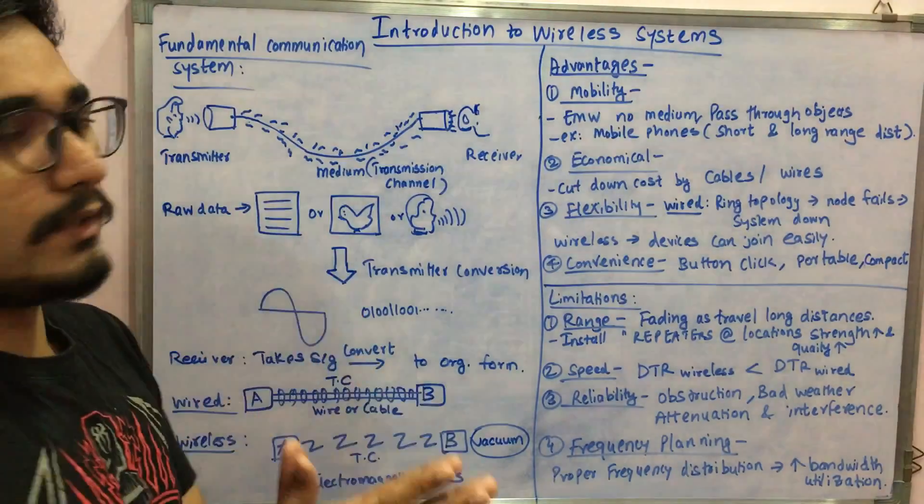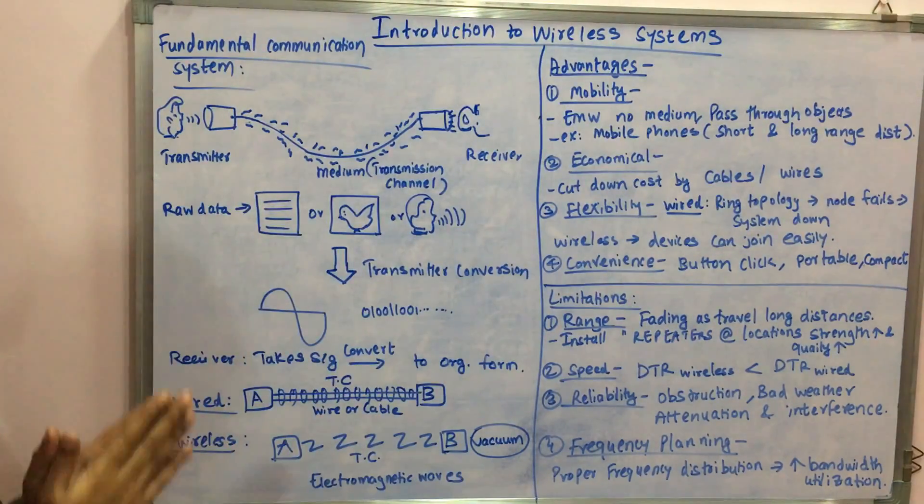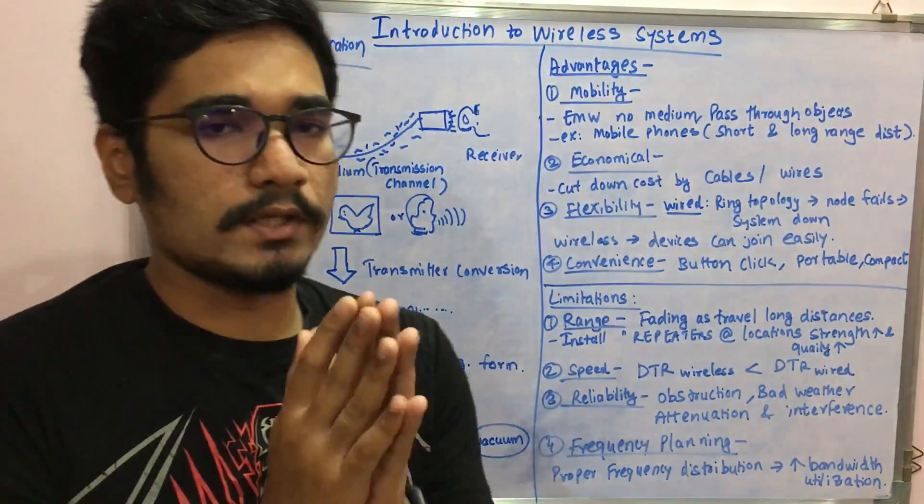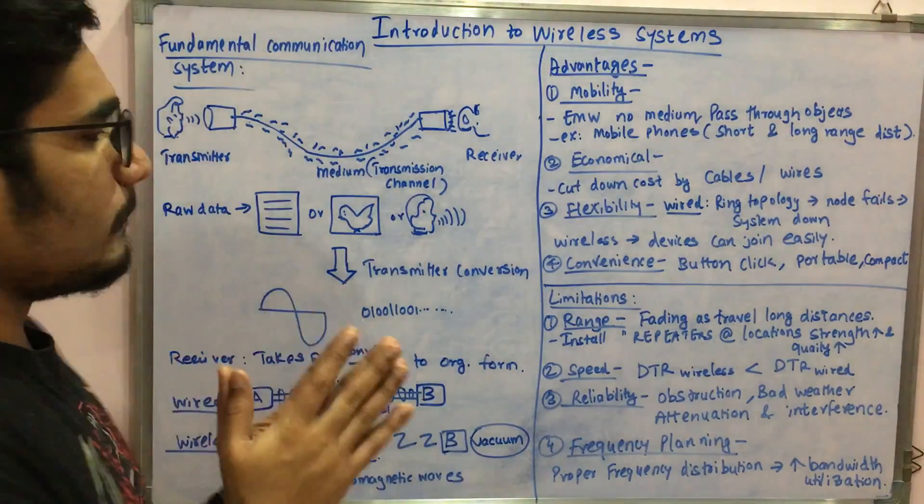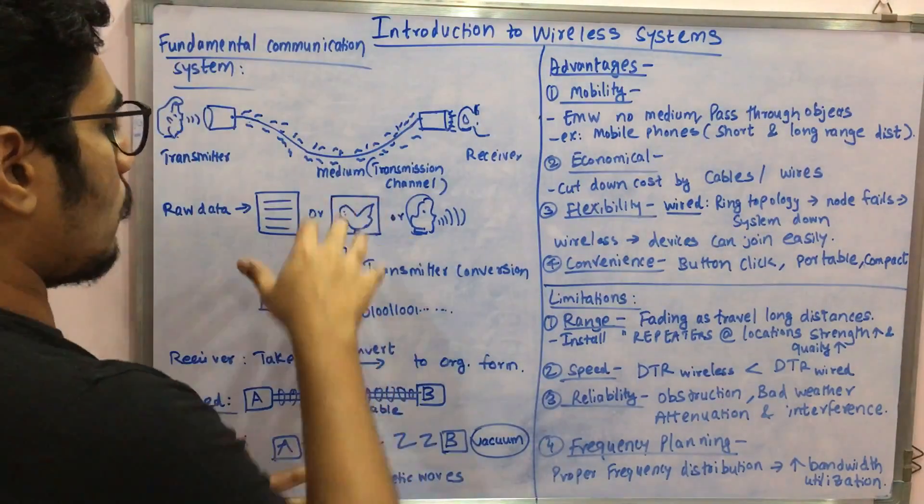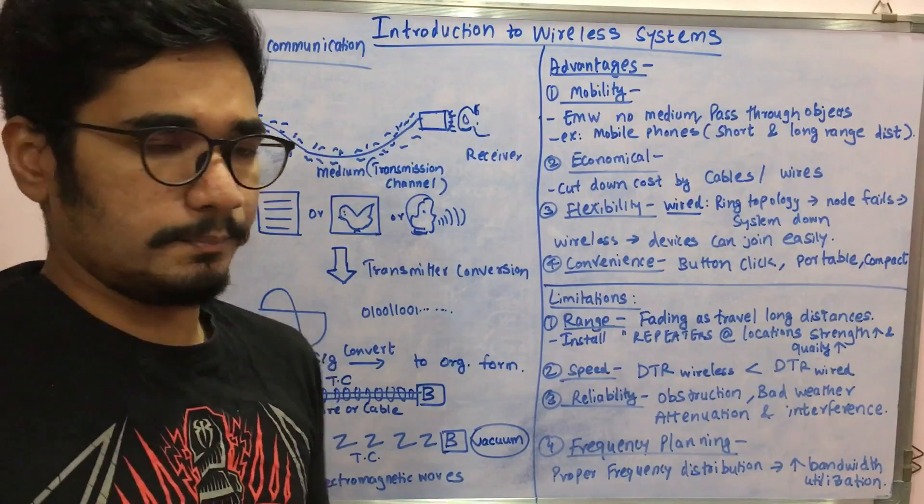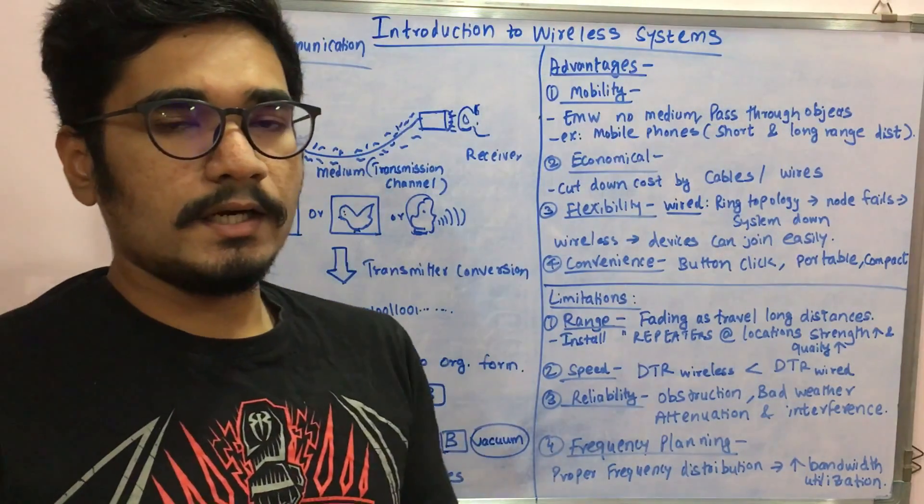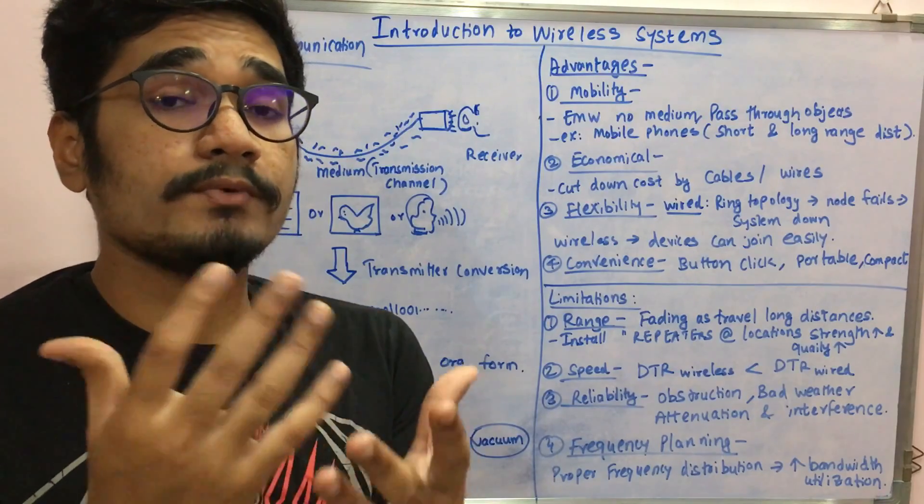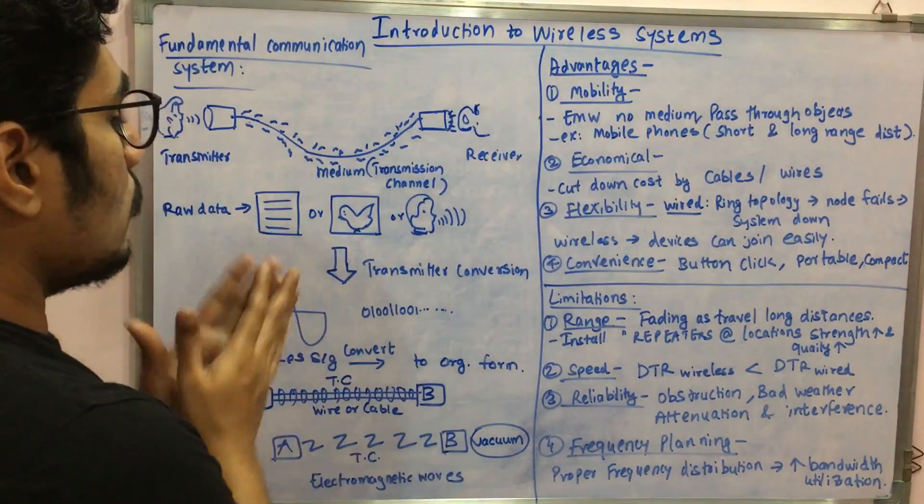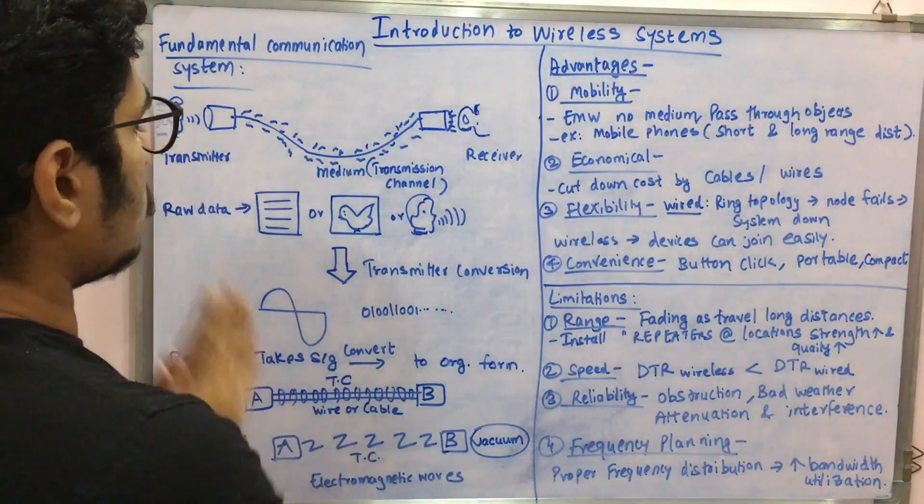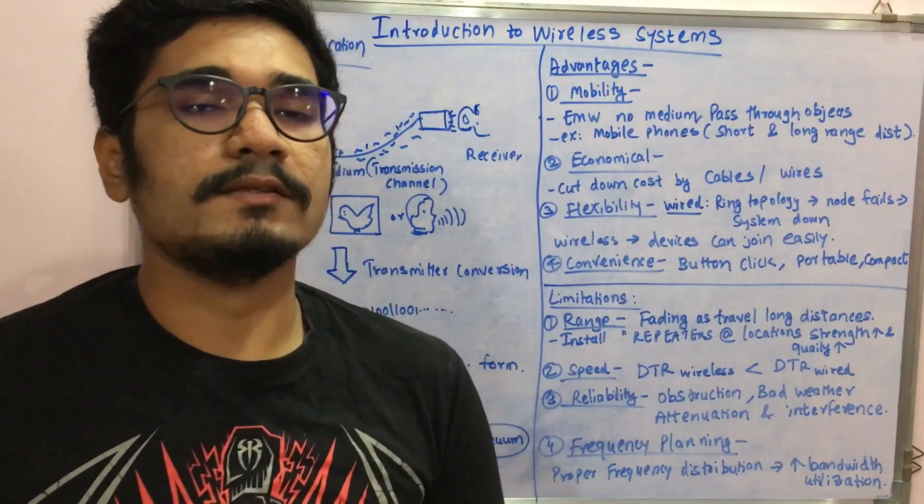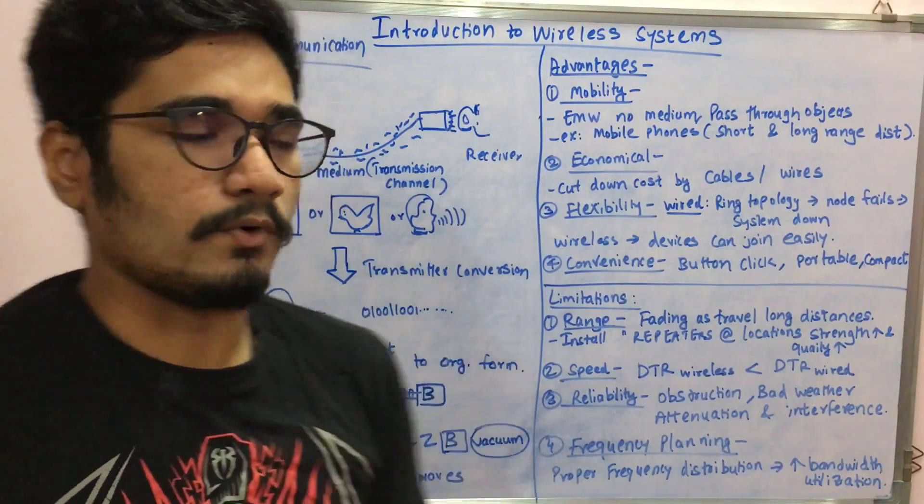This is how the basic fundamental communication system looks like. Next you have the raw data. Raw data can be in the form of a text file, it can be in the form of an image, or it can be in the form of normal speech. Then you might be transmitting and during the transmission, a kind of conversion takes place. Those conversions are carried out by the transmitter. It's the responsibility of the transmitter to convert it into appropriate form.